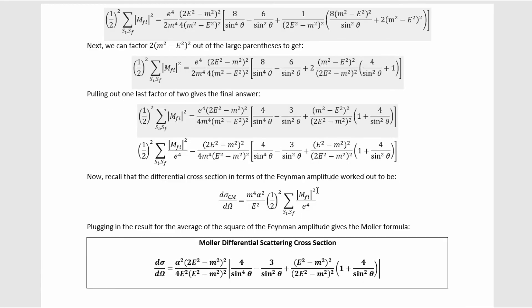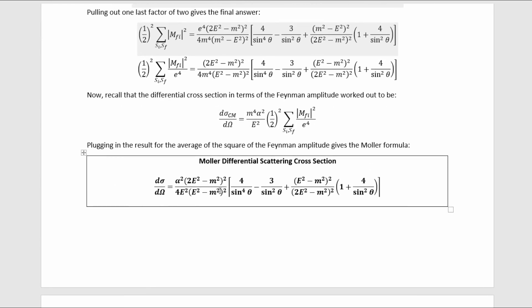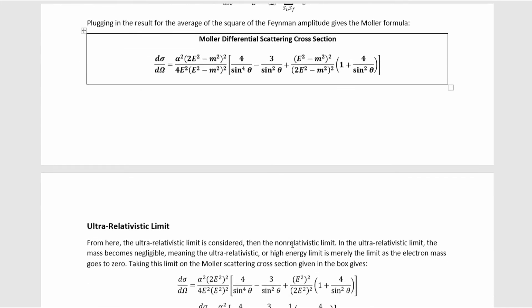Inserting this into the differential scattering cross-section formula gives us the Møller differential scattering cross-section formula. The pretty nature of the formula is one of the reasons why it's my favorite.